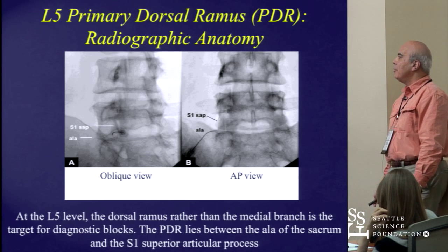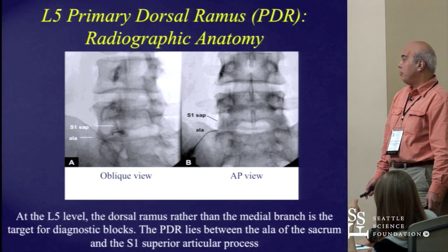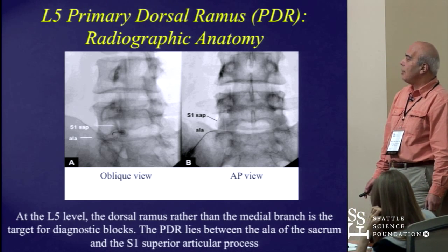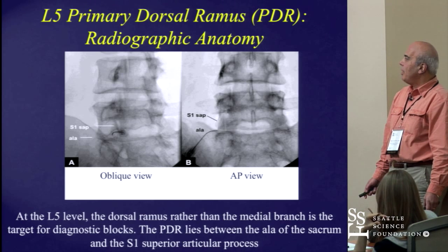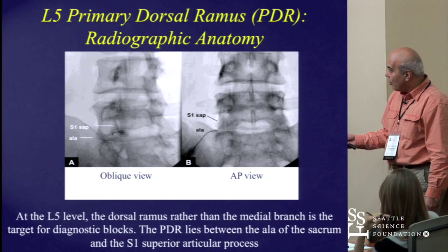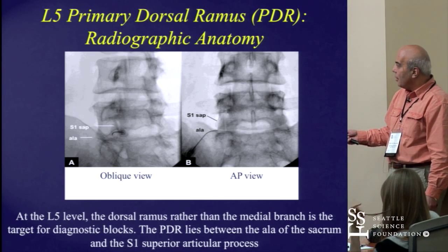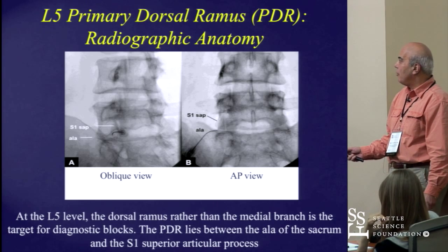At the L5 level, part of the innervation of the facet joint comes directly from the primary dorsal ramus itself, and not from the medial branch. The primary dorsal ramus usually lies between the ala of the sacrum and the S1 superior articular process, as pointed out in the picture. This is an oblique view, and the corresponding image is an AP view as indicated in the legend.